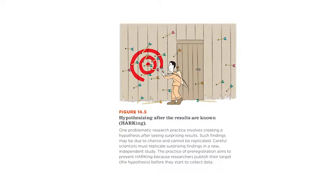The second issue is often called questionable research practices — habits that scientists sometimes follow that they probably shouldn't. One example is HARKing, which stands for hypothesizing after the results are known. This is when you wait for the results to come in and then write the introduction as if you predicted it all along. It's a questionable practice because surprise results may be especially likely to be flukes — they take advantage of chance variability in the data and they can't be replicated.